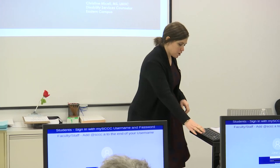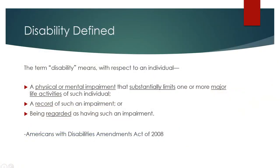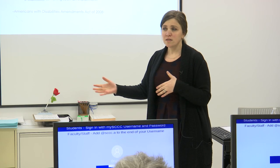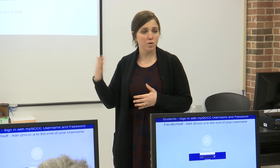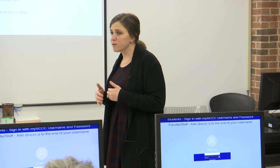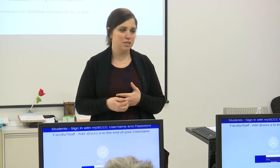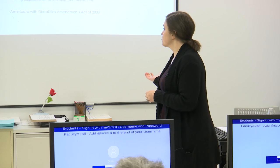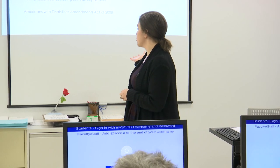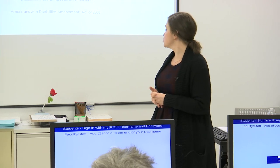Starting with the definition of disability: it's a physical and mental impairment that substantially limits one or more life activities for the individual — that could be school, work, or things like that. There should also be a record of such impairment. Students are required to provide documentation to our office in order to receive accommodations at the college level, and they should be regarded as having such an impairment. This comes right out of the Americans with Disabilities Amendments Act of 2008.